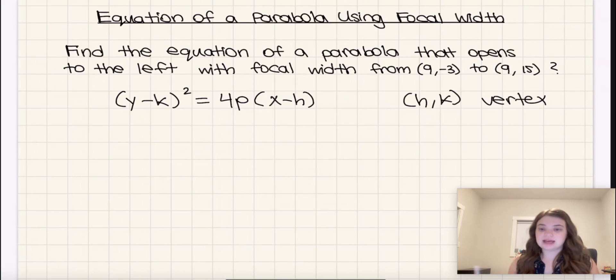So how can we find the vertex? Well, to find the x-coordinate of the vertex, we can find the average of the x values from where our focal width is. So in this case, it's going to be 9 plus 9 divided by 2, which is 18 divided by 2, which is 9.